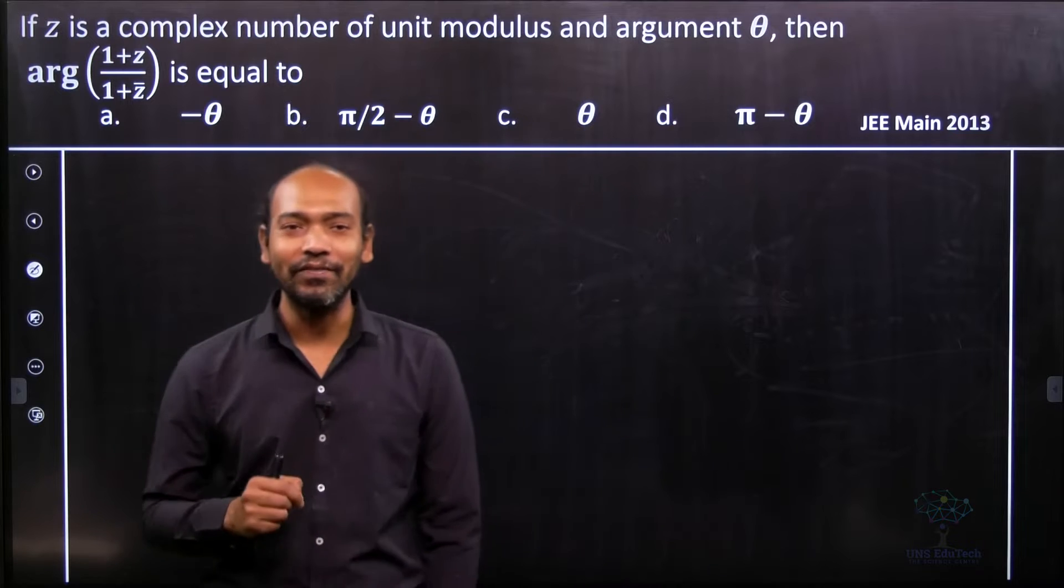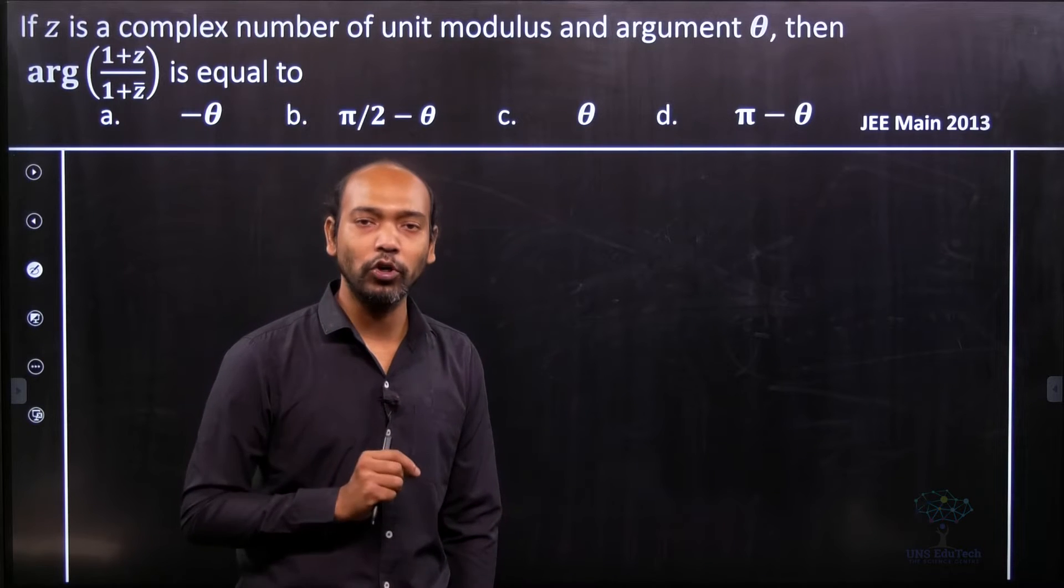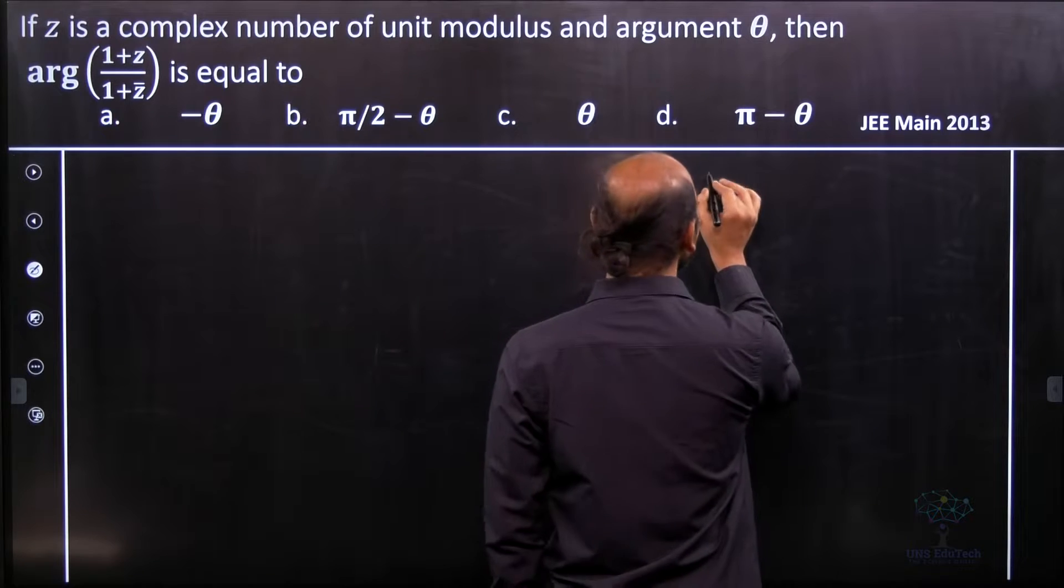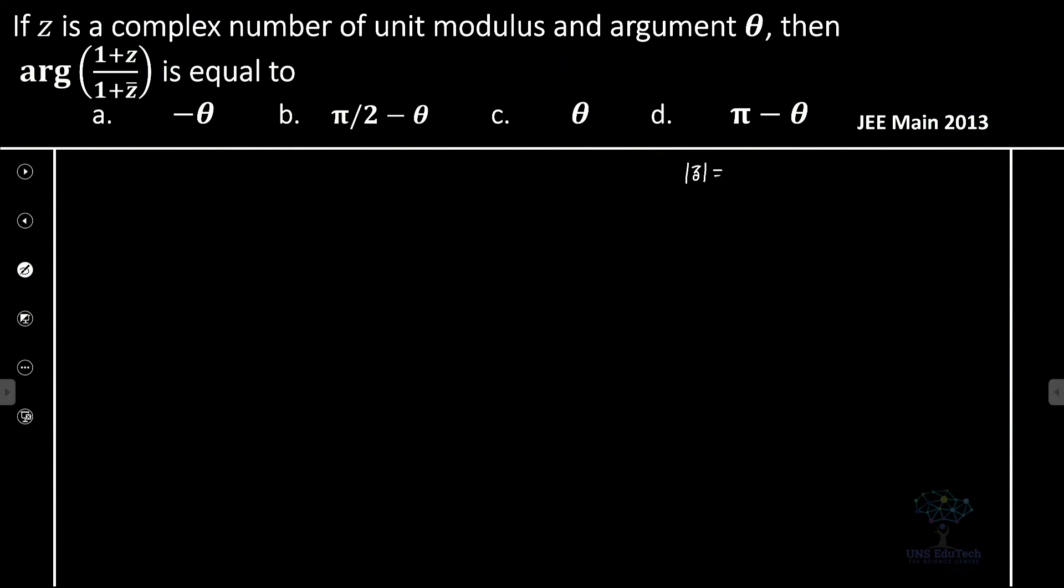Now what is given? It's given that z is a complex number with unit modulus and argument theta. So therefore, mod of z is equal to 1 and argument of z is equal to theta.